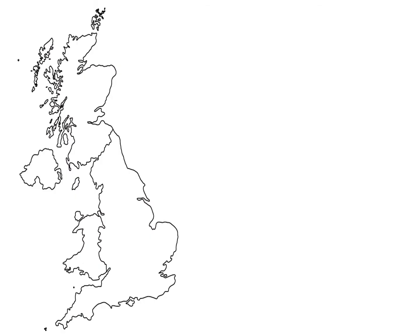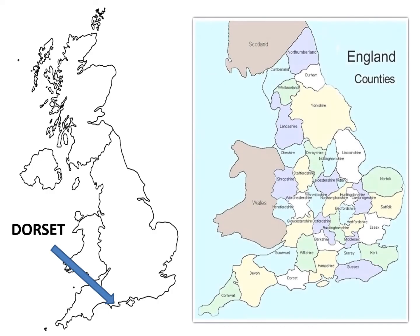The Dorset coast is found to the south of England. Looking at a county map, Dorset is here sandwiched between Devon and Hampshire, and this is the Dorset coastline. The area between Devon and Dorset is known as the Jurassic Coast, but we're going to be concentrating on the coast of Dorset.